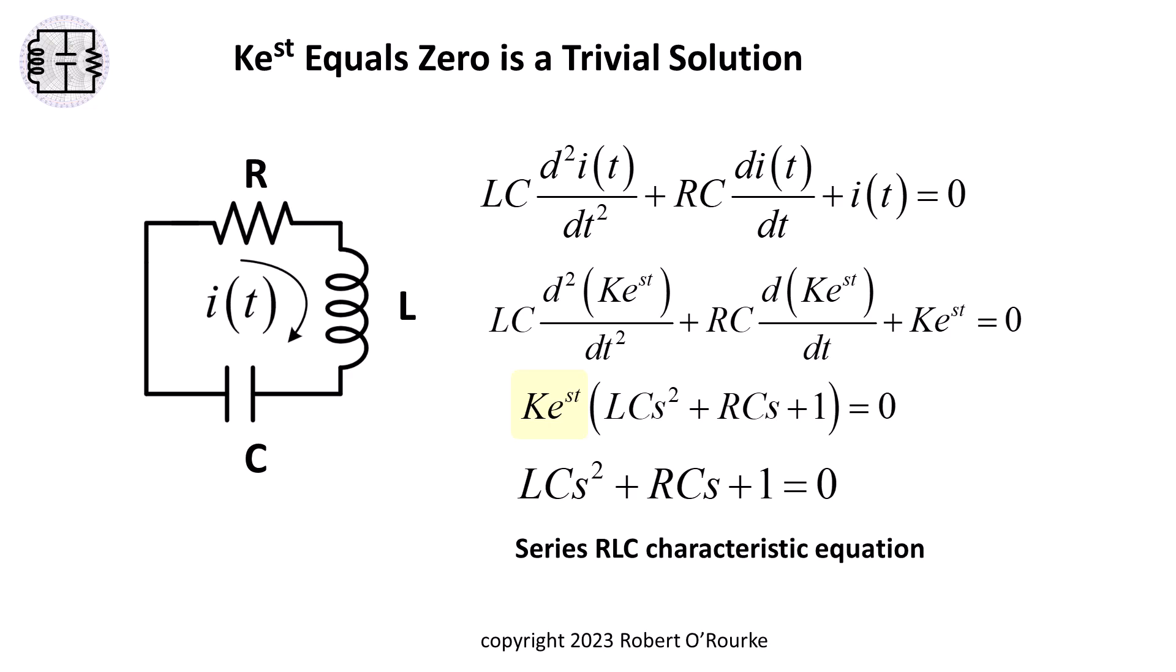Setting the exponential function itself equal to zero provides only a trivial solution. So the quantity in the brackets must equal zero. This is the characteristic equation for the differential equation in terms of R, L, C, and the complex frequency S.